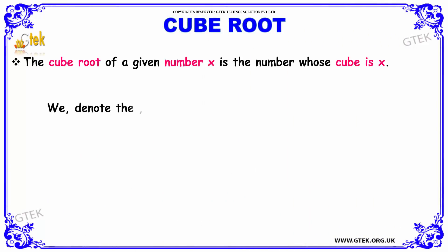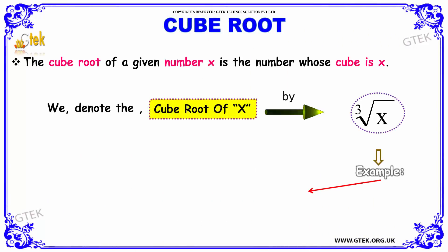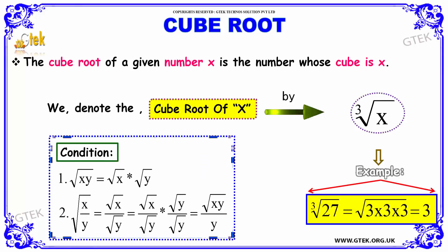Similarly, for cube root of a given number x, the number whose cube is x. We denote the cube root of x by using a superscript of 3 over the root.